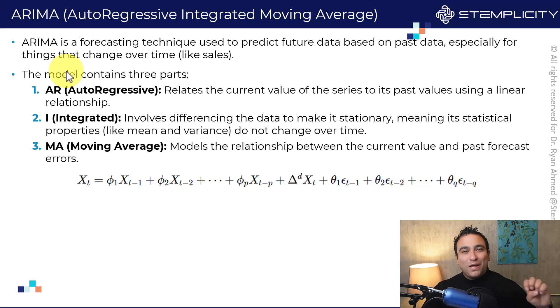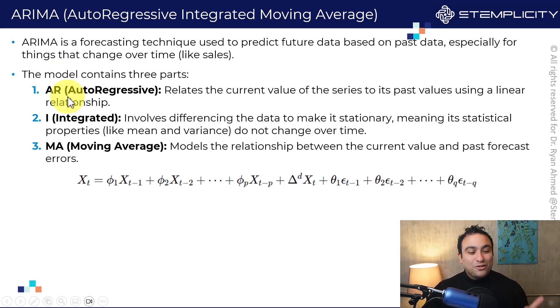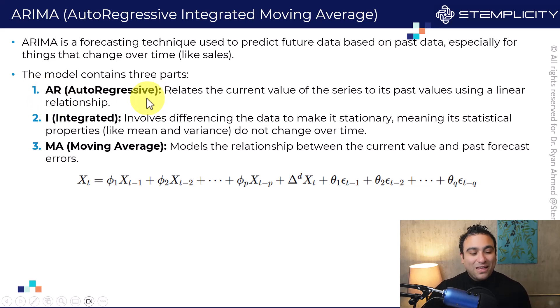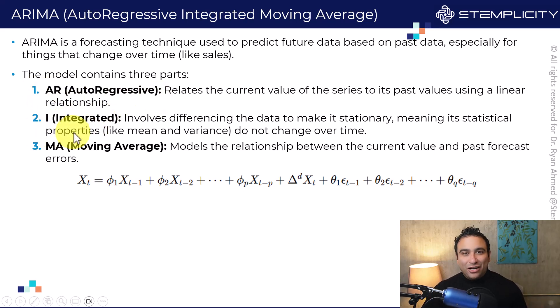The ARIMA model has three components. The first component is what we call Autoregressive. The second one is Integrated, and the third is Moving Average.